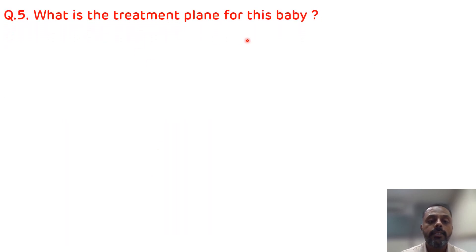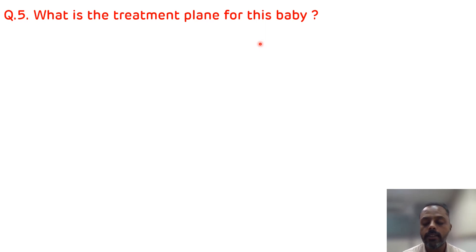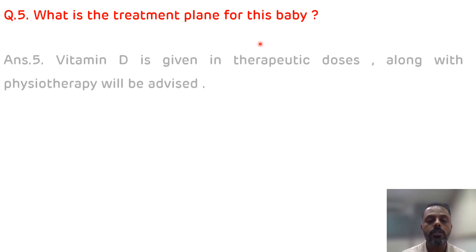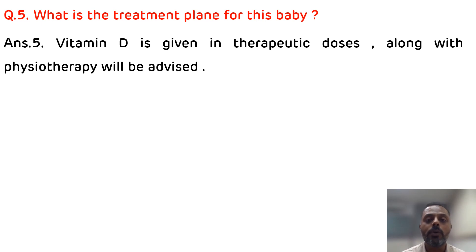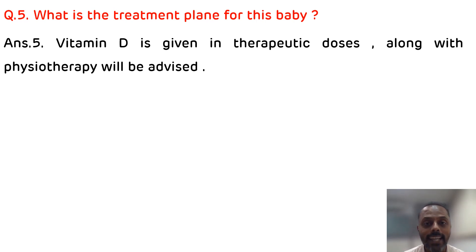The fifth question is: what is the treatment plan for this baby? This can be treated very well by therapeutic doses of vitamin D along with physiotherapy. That is all about the discussion of rickets based on this case study.